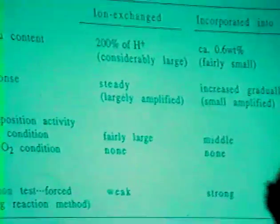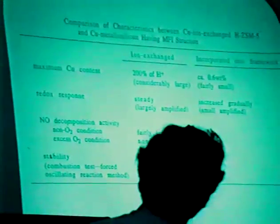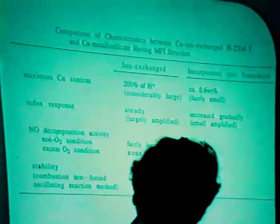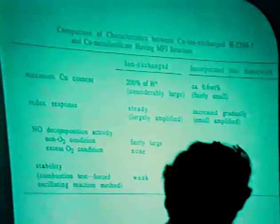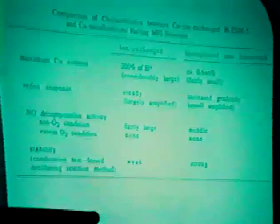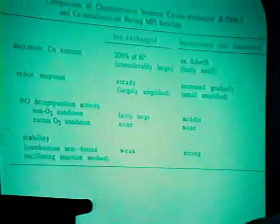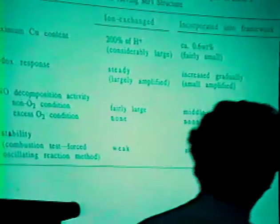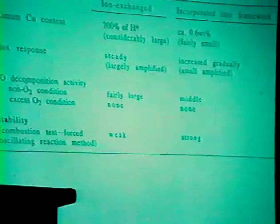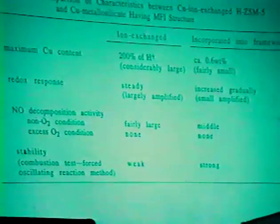This is the comparison. Copper can exchange by ion exchange up to 200% from the viewpoint of proton, because copper can be ion-exchanged as CuOH minus. But unfortunately in the incorporated system, only 0.6 weight percent can incorporate. But both of them, if there's excess oxygen condition in the reaction gas, none of them show steady-state NO decomposition. And we can confirm the stability of redox cycle repeatedly.